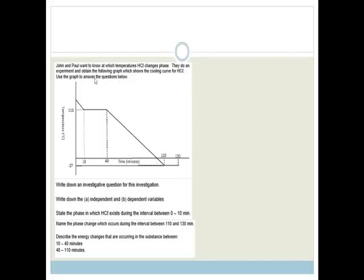Now it says, John and Paul want to know at which temperature HCl changes phase. They'll do an experiment and obtain the following graph, which shows the cooling curve. This is the cooling curve of HCl. Use the graph to answer questions below. So now before I even start reading the questions, I look at the graph. So I've got temperature, degrees Celsius, at 110 degrees something happens, and then at 40 minutes something drops, and then there we go again.